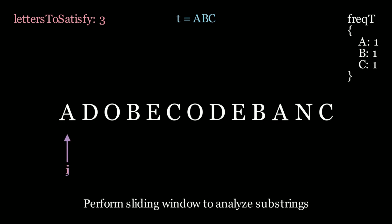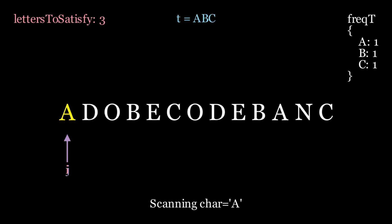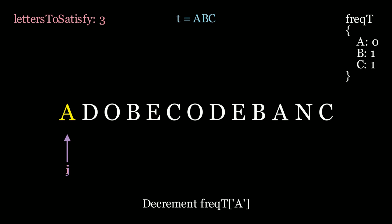Now we need to initialize the sliding window. We add two pointers i and j and move j as far as we can until we meet the condition that the current window contains all the characters from t. We scan a and ask: is a inside my frequency map of t? It is, so we need to decrement the hash map value at a — it goes from 1 to 0. Since the value is 0, we just satisfied this letter, so we decrement letters to satisfy from 3 to 2. We satisfied a; now we need to find a b and a c.